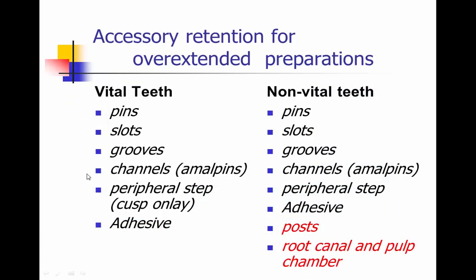When looking for accessory retention for overextended preparations in vital teeth, we're thinking pins, slots, grooves, channels (also called amalgam pins), peripheral steps — a cusp onlay would be a peripheral step — or a bonding agent made for amalgam, or an adhesive used for composite. For non-vital teeth, we use the same pins, slots, grooves, channels, and peripheral steps, plus we have the ability to place posts or place restorative material into the root canal and the pulp chamber for additional retention.